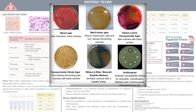Non-hemolytic moist colonies are observed in blood agar. MacConkey agar is a low selective media which shows round, translucent, pale and non-lactose fermenting colonies. Highly selective media include deoxycholate citrate agar, which shows non-lactose fermenting pale colonies with black centers, and xylose lysine deoxycholate agar, which produces red colonies with black centers. Wilson Blair bismuth sulfide medium produces characteristic jet-black colonies with a metallic sheen due to production of H2S. Paratyphi A, which does not form H2S, produces green-colored colonies. This medium is useful to selectively isolate Salmonella bacilli from a sample containing many other microbes.